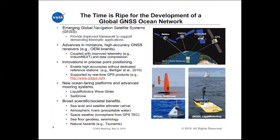Innovations in precise point positioning enable high accuracy without dedicated reference stations. There are also many new potential robotic ocean-carrying platforms — saildrones, liquid robotics wave gliders. NOAA has advanced buoys from the DART system, which is the one we're actually using. There are broad scientific and societal benefits not just for seafloor geodesy, but for studying sea level, calibrating satellite altimeters, measuring properties of the neutral atmosphere and charged particles, and for natural hazards.